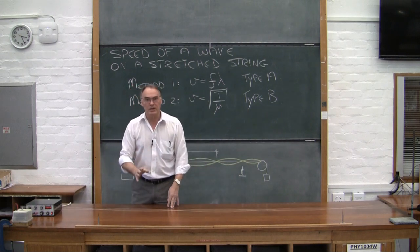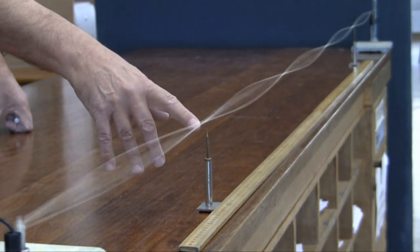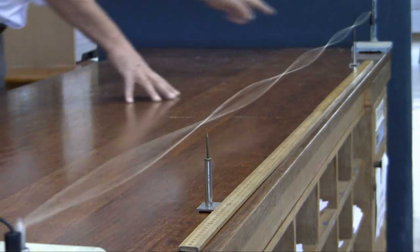And if you get the frequency just right, you get what's known as a standing wave. You can see here that there's a node over there and there's a node over here.